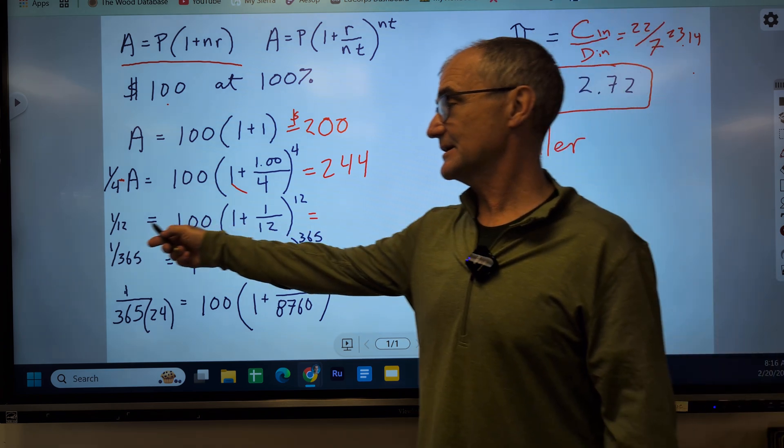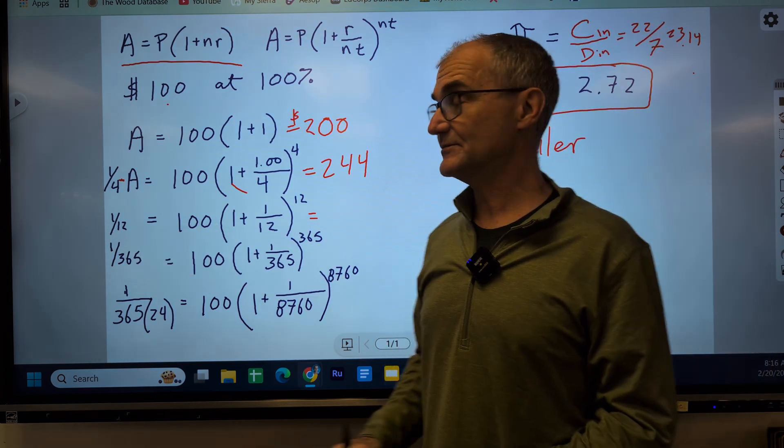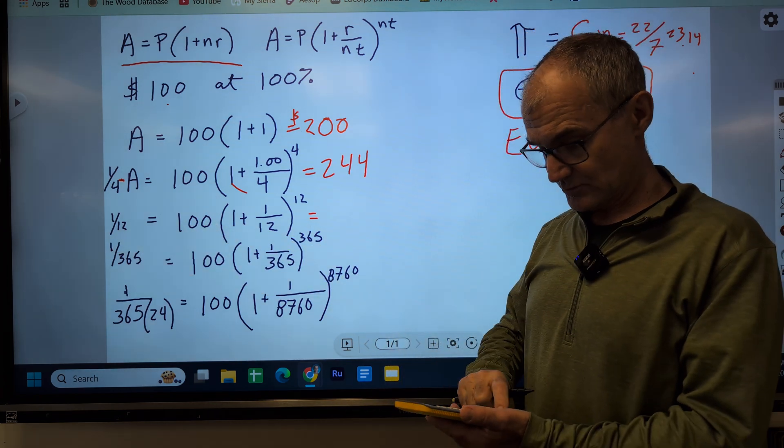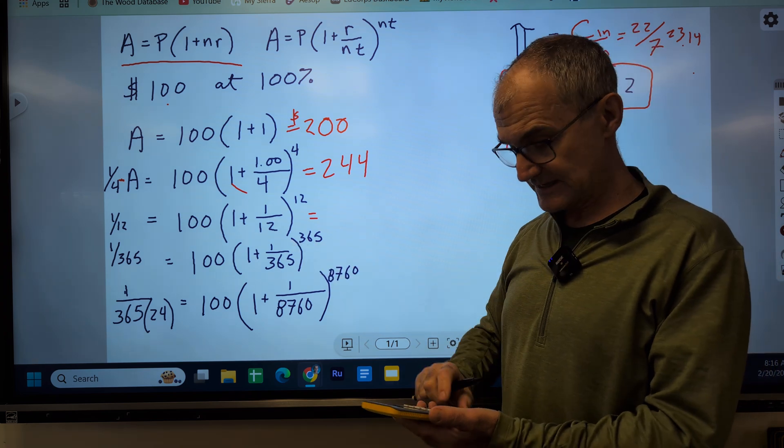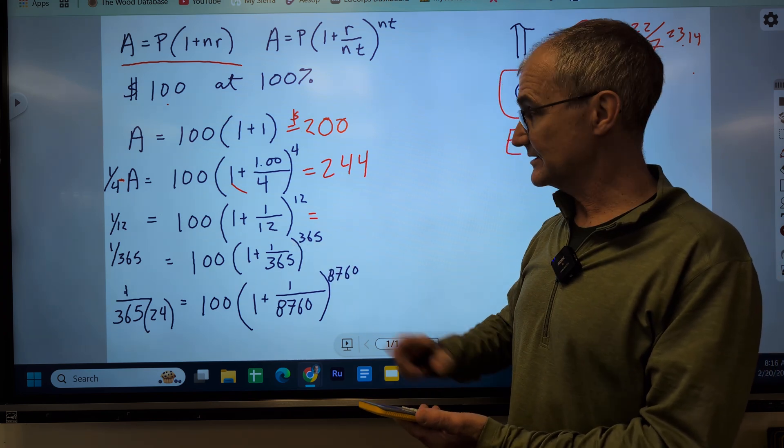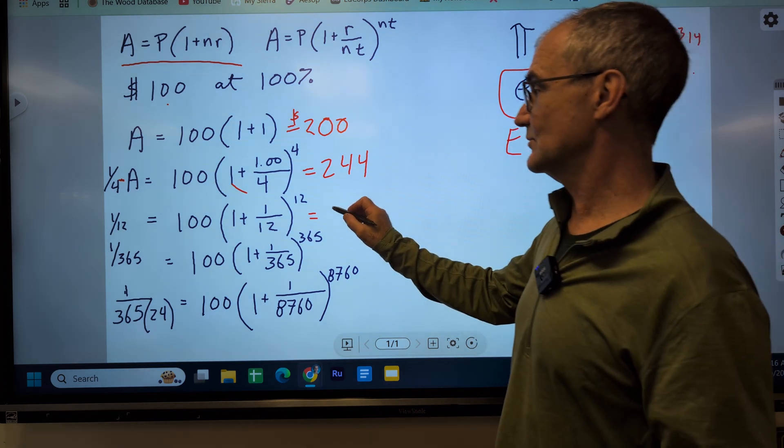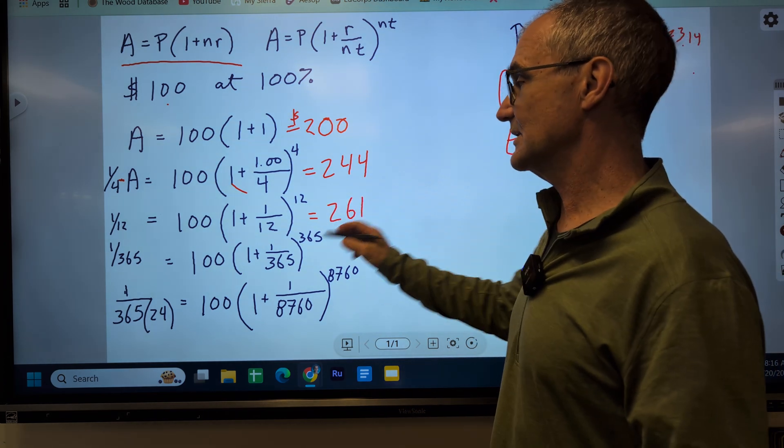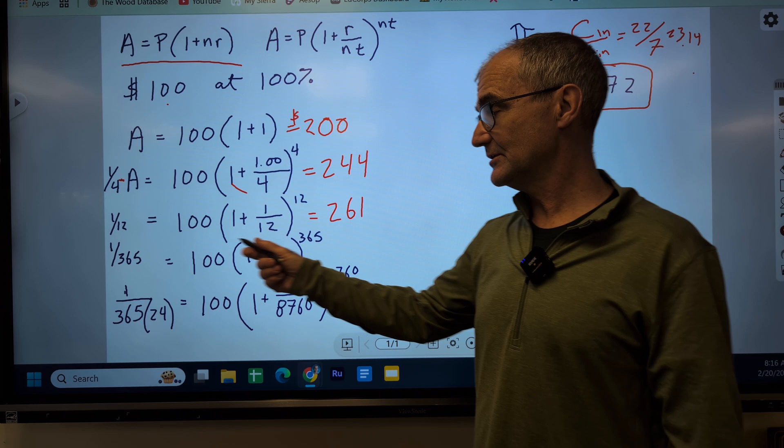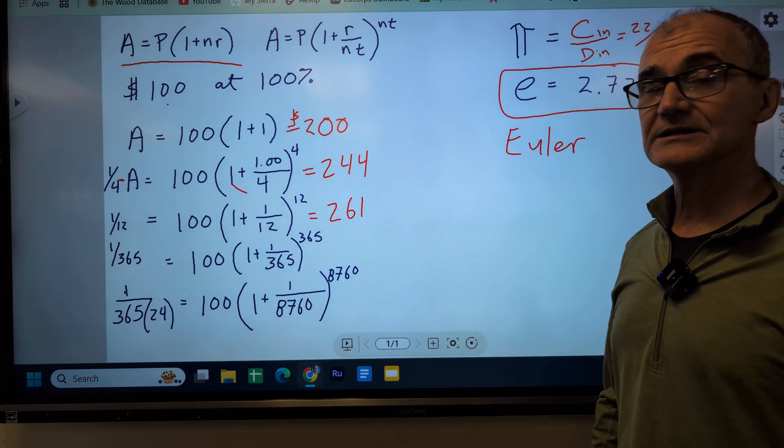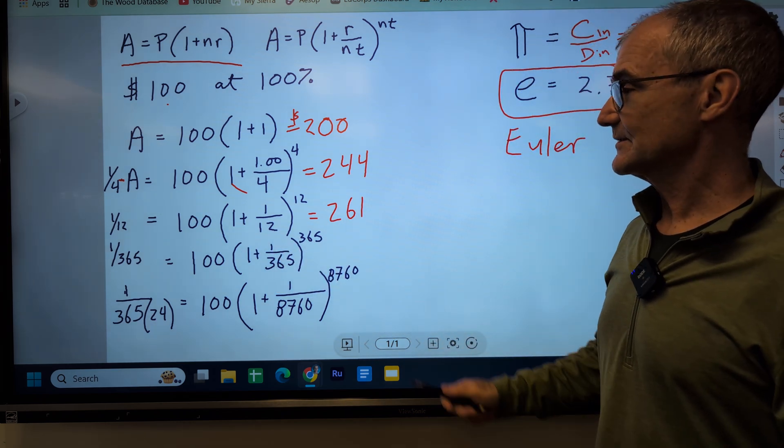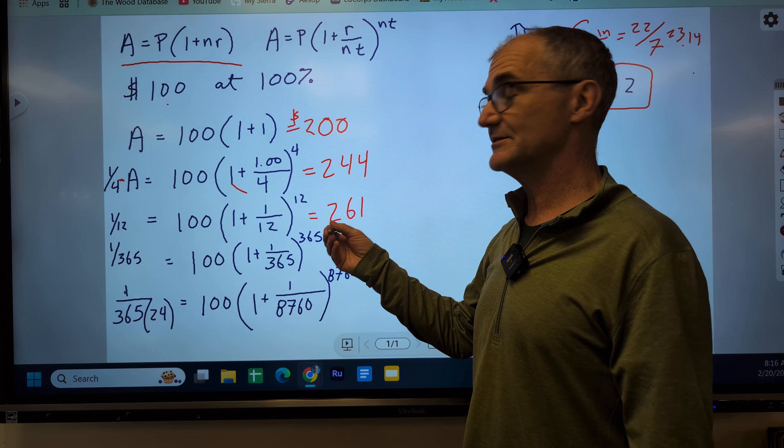So if I'm working simple interest, I earn $200 after one year. If I have the same money in the bank but I am compounding quarterly, I have $244 in the bank. Let's take a look at compounding it monthly, 12 months in the year. I go 1 divided by 12 plus that 1 to the power of 12, and that gives me 2.61. 2.61 times my $100 principal gives me $261 in the bank.